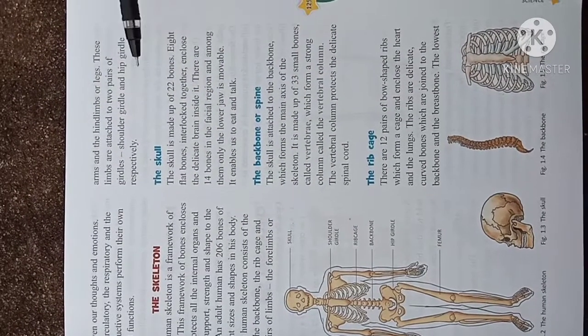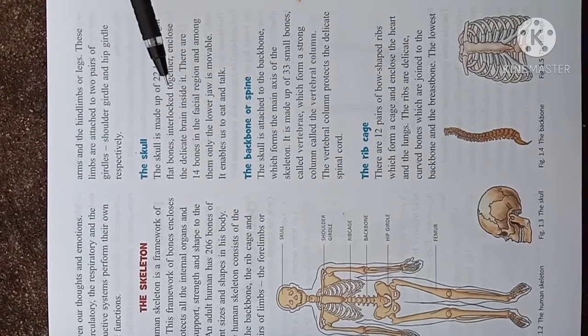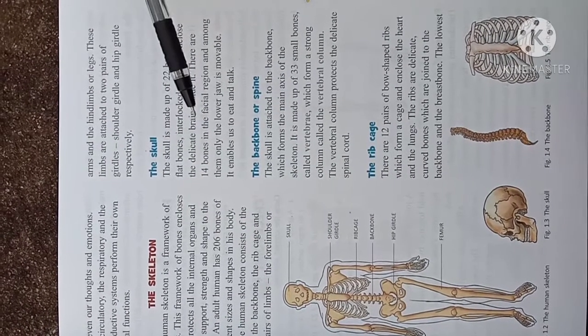Eight flat bones interlock together and enclose the delicate brain inside it. There are 14 bones in the facial region. Among them, only the lower jaw is movable and it enables us to eat and talk.